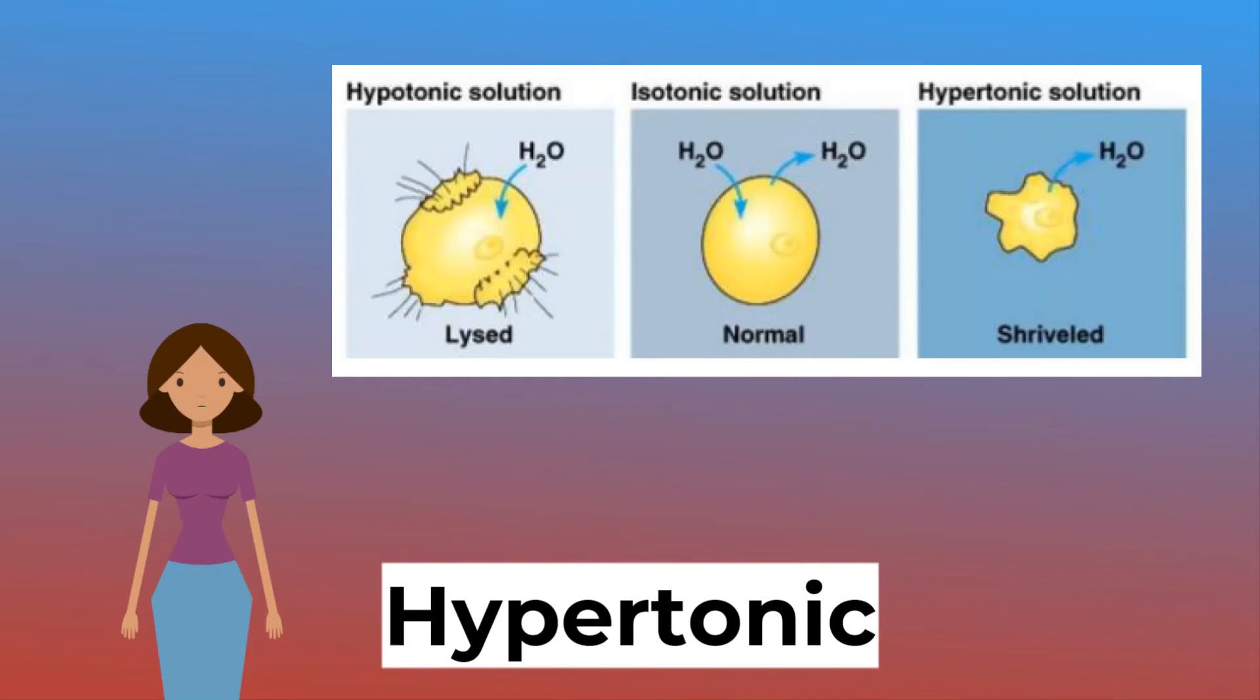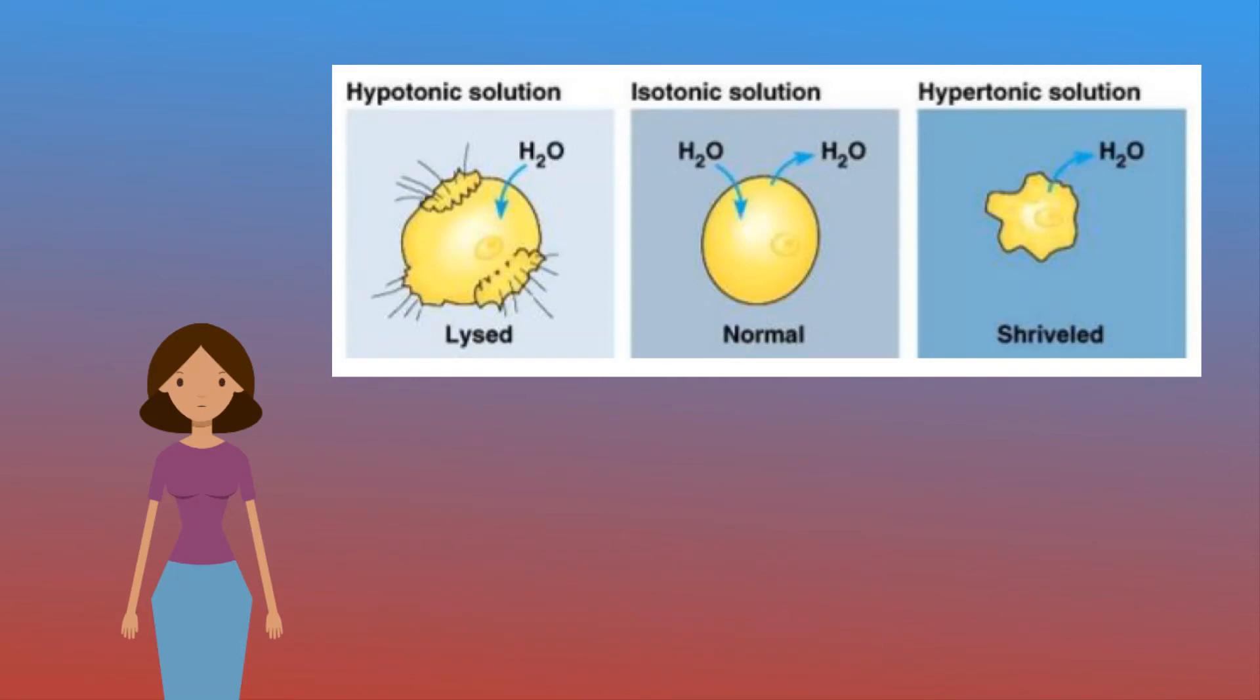Hypertonic solution. Water will move out of the cell because the water potential is higher in the cell. The cell will shrivel up because it is losing water to the environment.